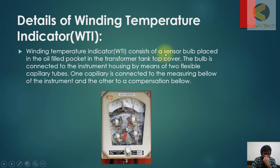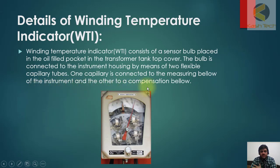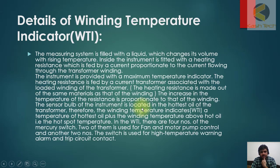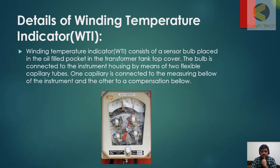The WTI consists of a sensor bulb based in an oil-filled pocket in the transformer tank top cover. The bulb is connected to the instrument housing by means of two flexible capillary tubes — one capillary is connected to the measuring bellows of the instrument and the other to the compensation bellows. This is a real picture of the winding temperature indicator. The measuring system is filled with liquid.